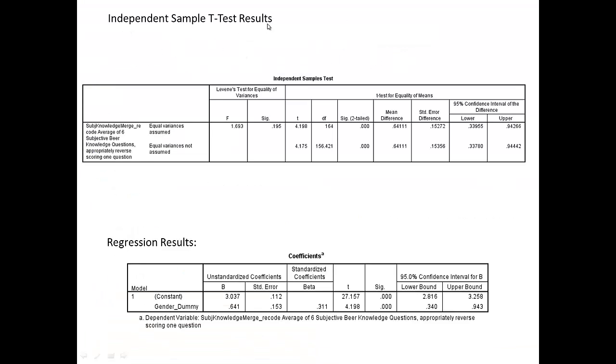Here, we have our independent sample t-test results and our regression results presented together. Remember, we can recall from the independent sample t-test that we actually have a significant result. Specifically, the mean difference of 0.64111 is statistically significant at the 95% level. That's what the independent sample t-test says. When we look at the regression results down here, we see what it looks like to be something totally different. We see two different rows, one being the constant with a beta of 3.037, and then the gender dummy code with a value of 0.641.